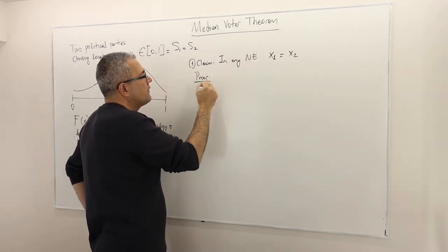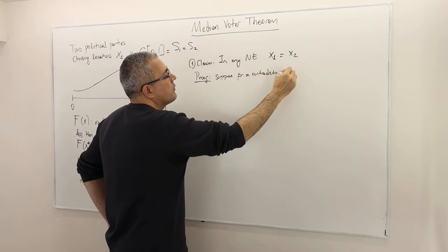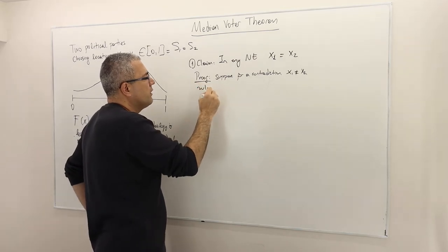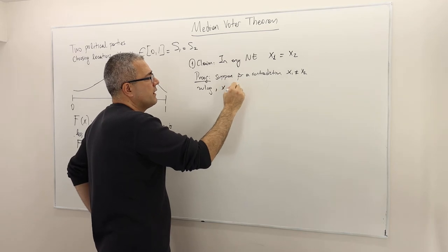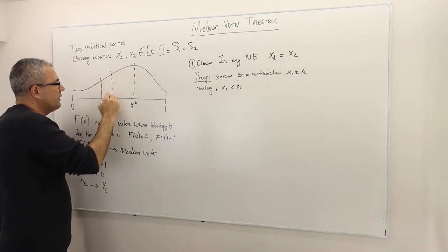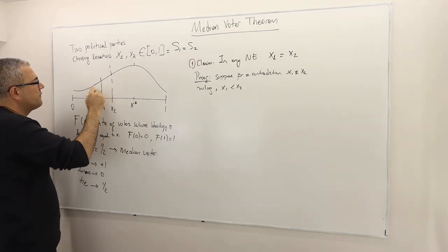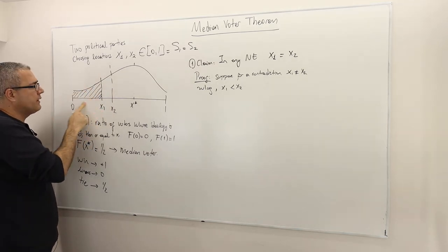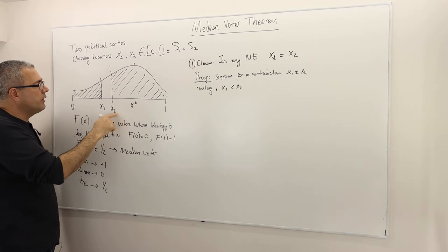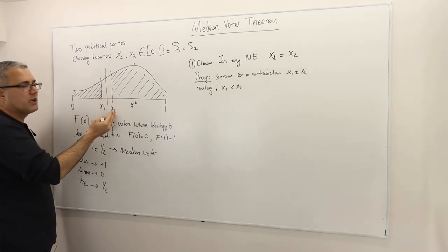How do we prove that? Suppose for a contradiction that x1 is not equal to x2. Without loss of generality, suppose x1 is less than x2. So for example x1 is here and x2 is here on the number line. When you look at this picture, all the voters to the left of the midpoint between x1 and x2 vote for party 1, all those to the right vote for party 2, and they split the voters in between.